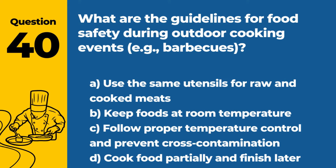Question 40. What are the guidelines for food safety during outdoor cooking events, e.g., barbecues? a. Use the same utensils for raw and cooked meats. b. Keep foods at room temperature. c. Follow proper temperature control and prevent cross-contamination. d. Cook food partially and finish later. Answer c. Follow proper temperature control and prevent cross-contamination. During outdoor cooking events, it's important to follow proper temperature control for cooking and storing food and to prevent cross-contamination between raw and cooked foods.